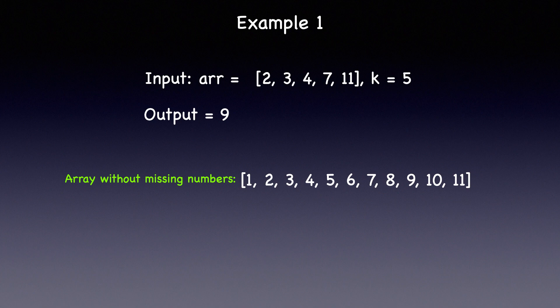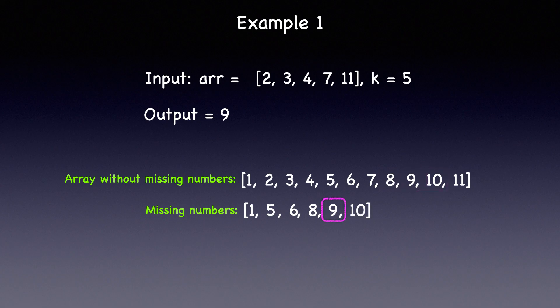Let's visualize the array starting from 1 up to the last element 11 without any missing numbers. Now if you compare the two arrays, the numbers missing in the input array are 1, 5, 6, 8, 9 and 10. Therefore, the fifth missing number is 9, which is the output. So that was pretty straightforward.